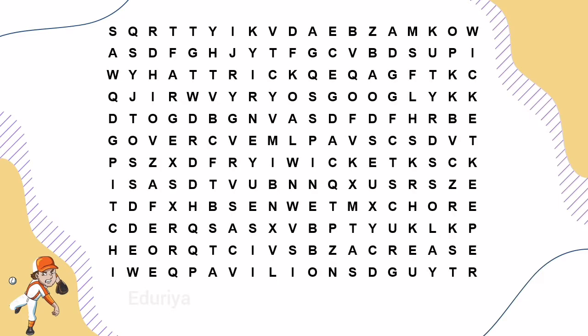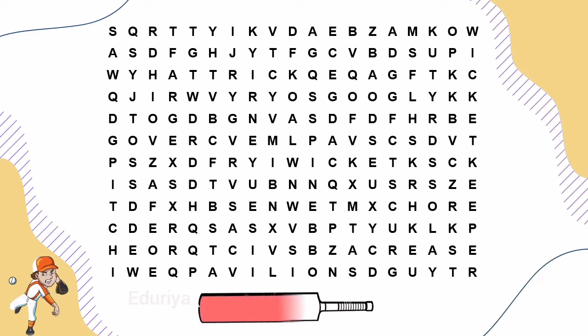Here is the second clue. The flipping of a coin to determine which captain will have the right to choose whether their team will bat or field at the start of the match. The answer is Toss.